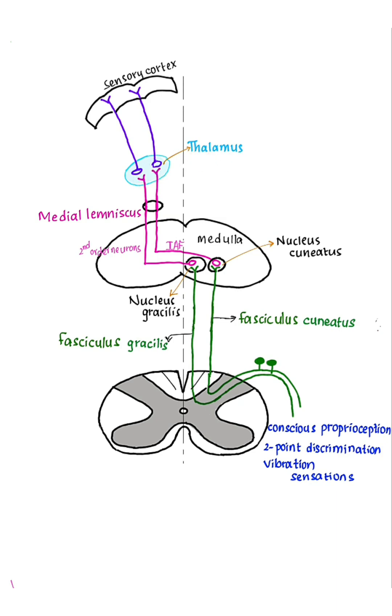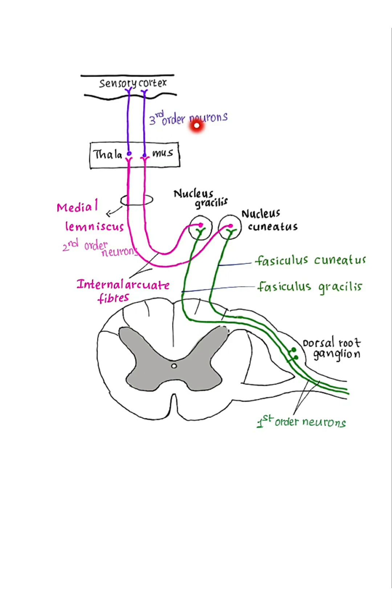Third-order neurons: Their cell bodies are present in VPL nucleus of thalamus and their axons terminate in sensory cortex.